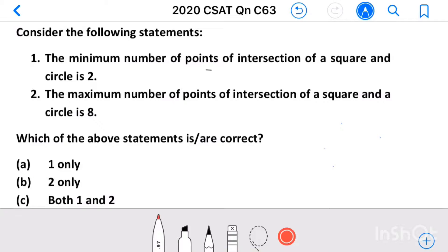Question number 63. Consider the following statements: Statement 1, the minimum number of points of intersection of a square and a circle is 2. Statement 2, the maximum number of points of intersection of a square and a circle is 8.